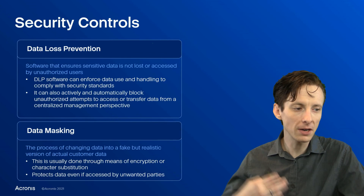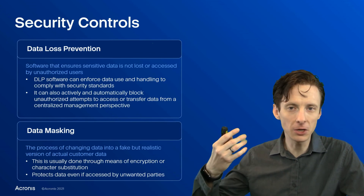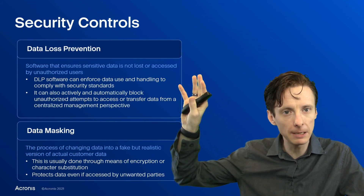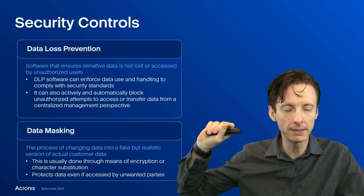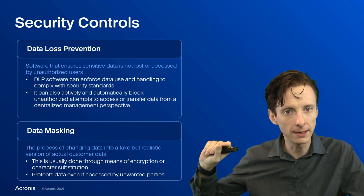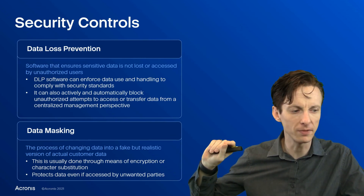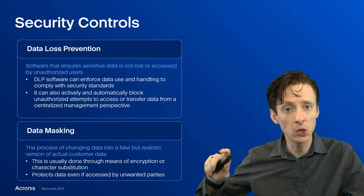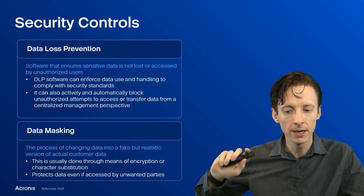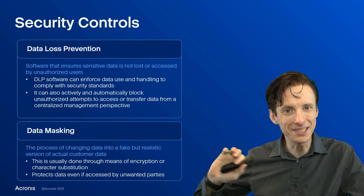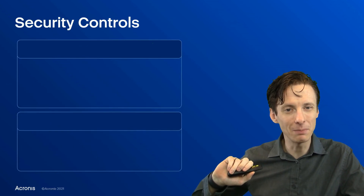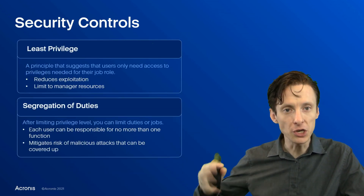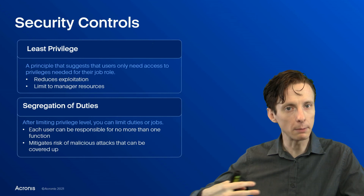Just a little bit more — there are some other security controls you can put in place. DLP to detect either intentional or unintentional exposure of data. Data masking to remove identifying characteristics in data and make it less of a breach were it to be breached.